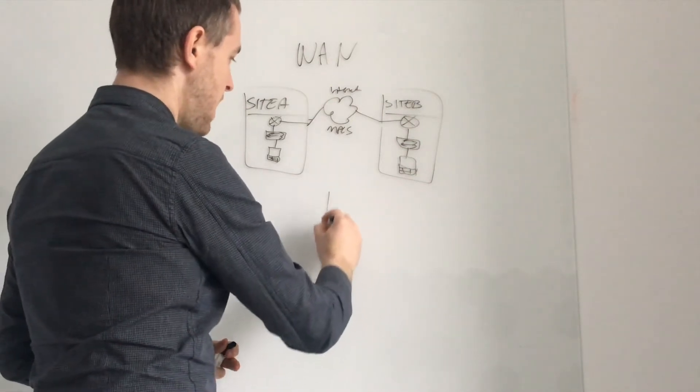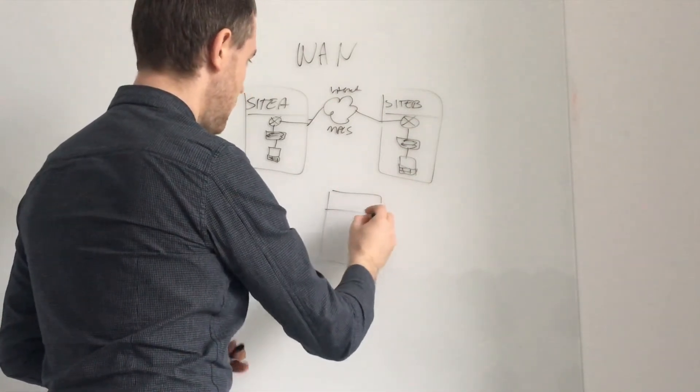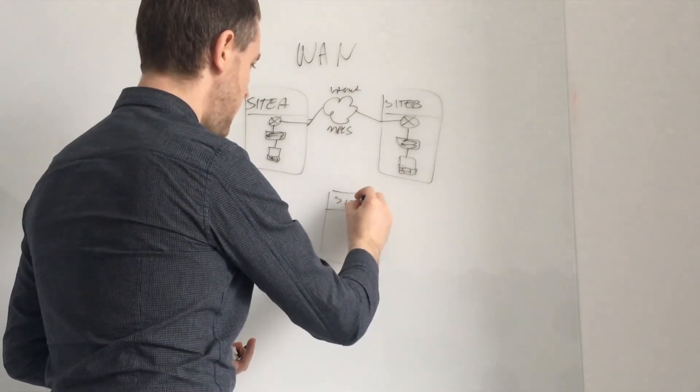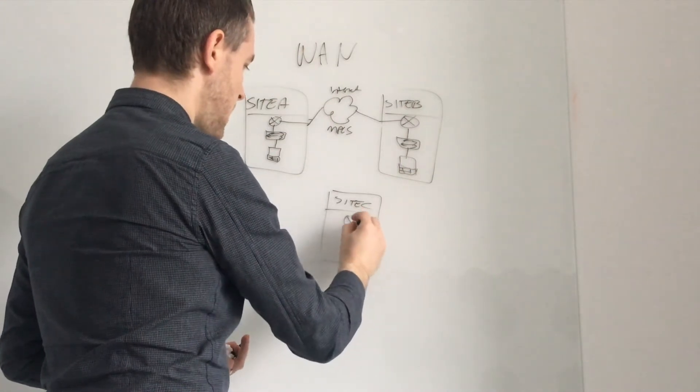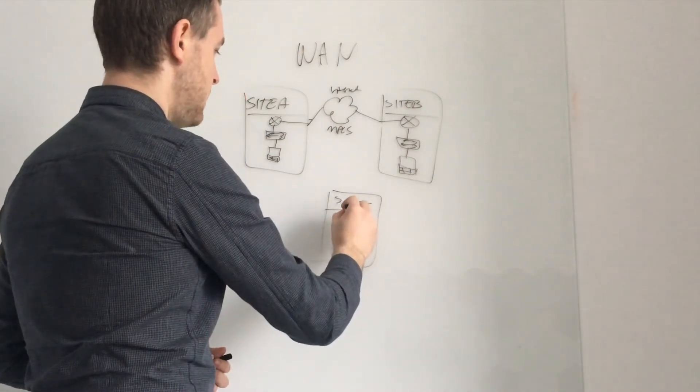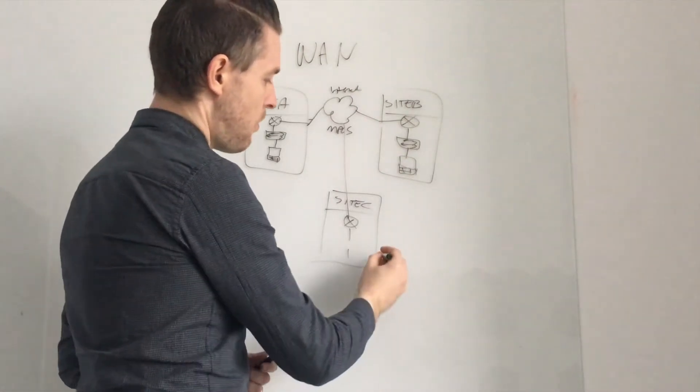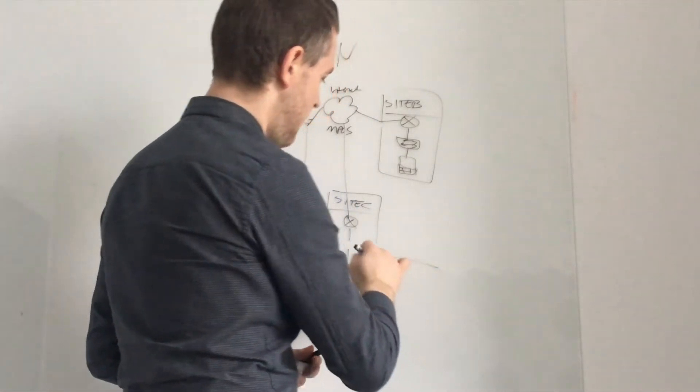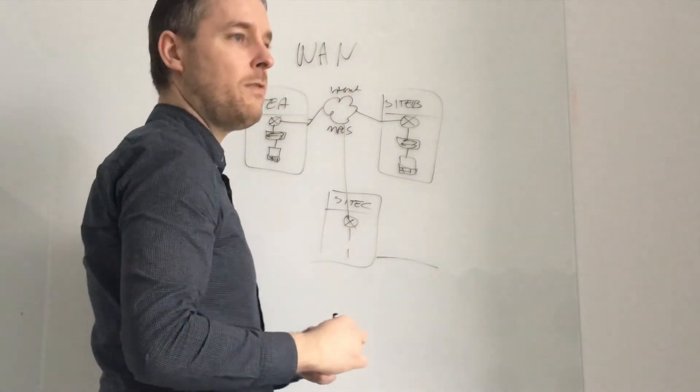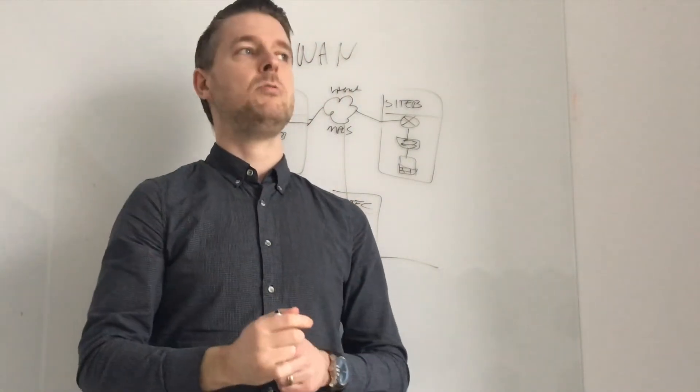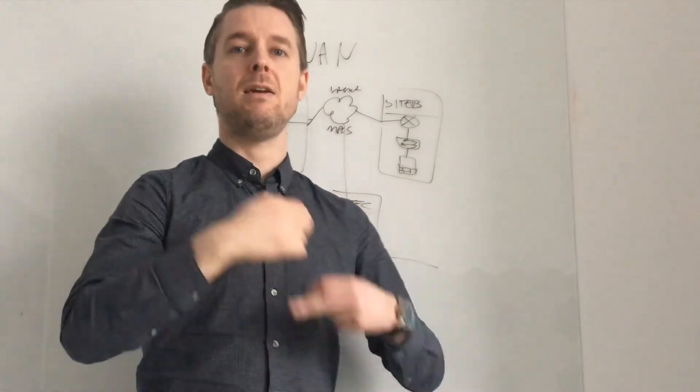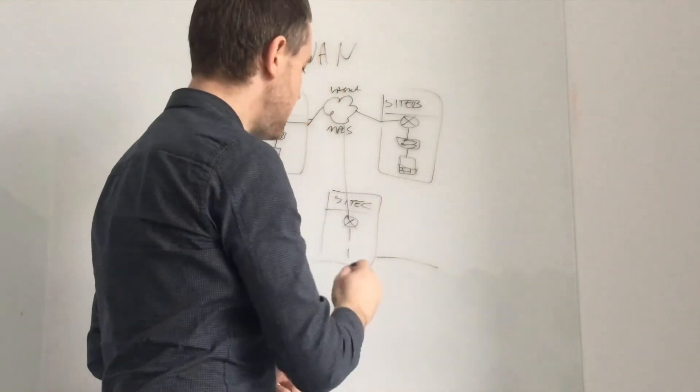And then likewise you can have another site down here, we'll call this site C, with its own devices, etc. And then in turn that is connected out into your MPLS. You could then also have remote sites. So this could be like, you know, let's say this is, you've got two sites that are within a hundred meters of each other. Maybe it's like in a factory or in a plant, we've got a site C.